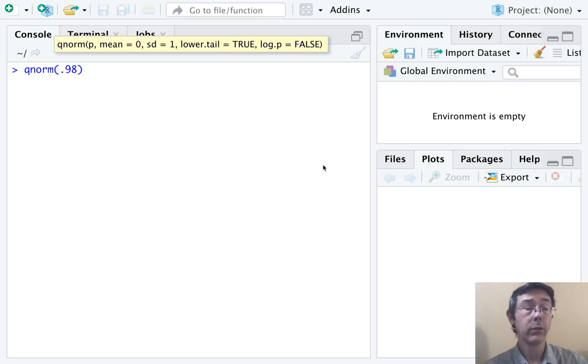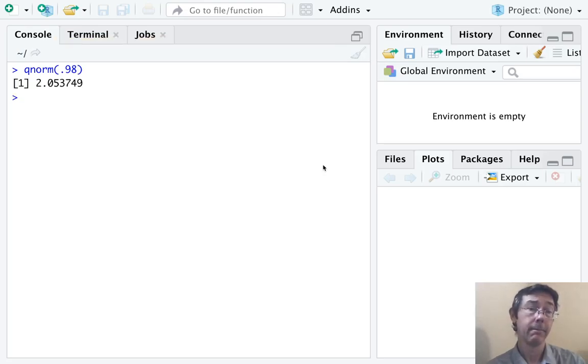We'd like to know the z-score that has 98% of the area to the left, so we want qnorm of 0.98. And here we get z equals about 2.05. Notice that the input here was as a decimal, not as a number between 0 and 100, rather a number between 0 and 1.